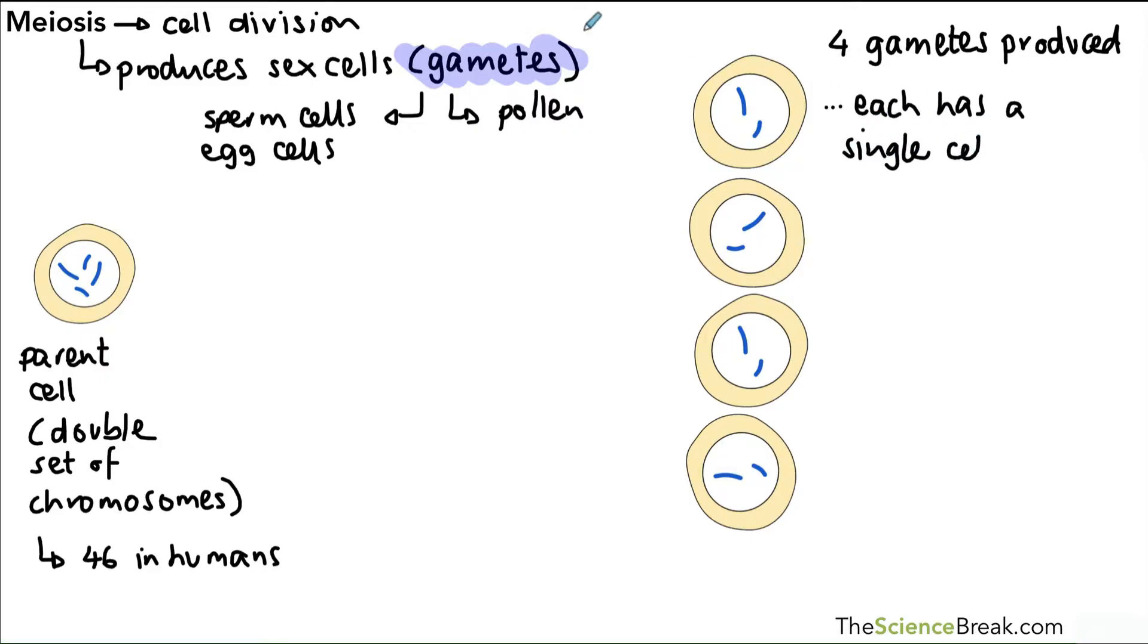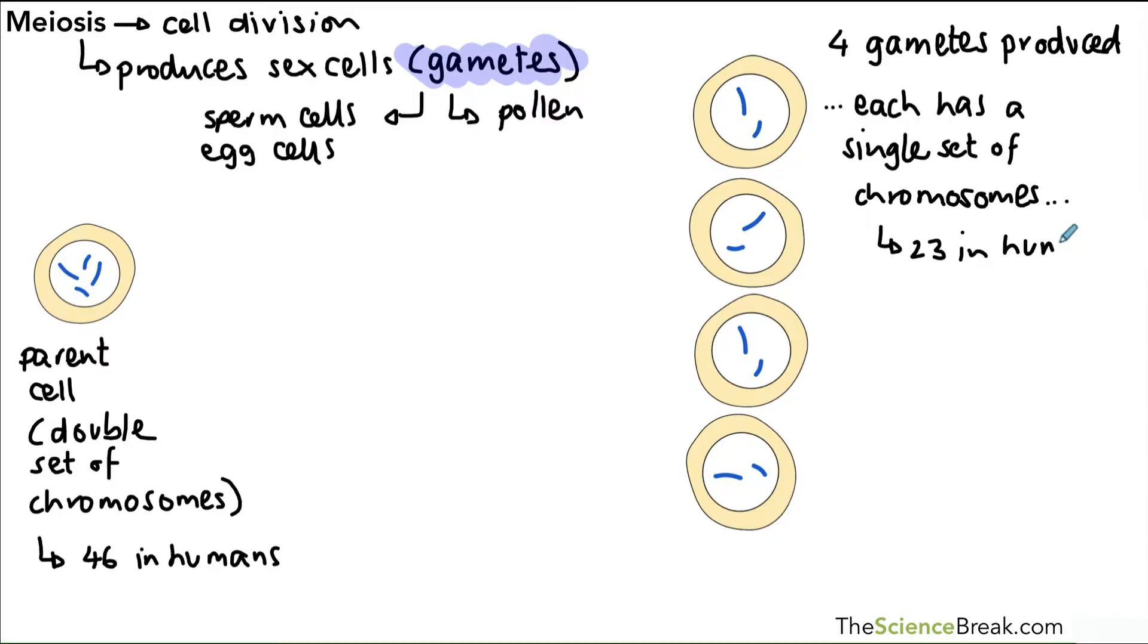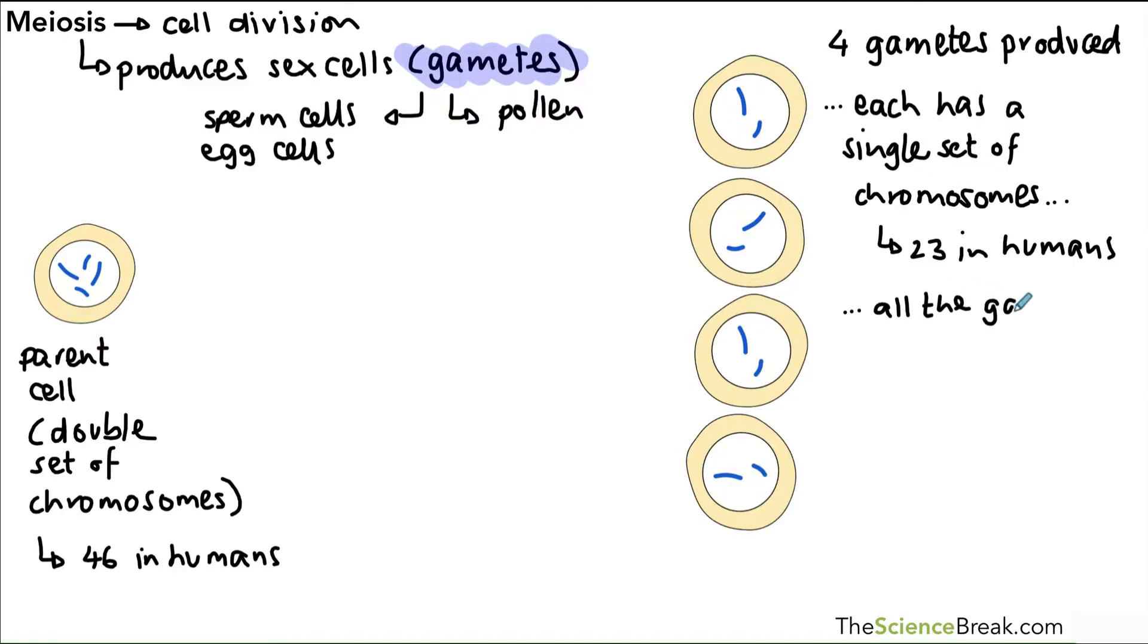In each one you can see that there is a single set of chromosomes. Each has a long chromosome and a short chromosome, whereas in the parent cell we had two long, two short. So if in humans the double set is 46, a single set will be 23.